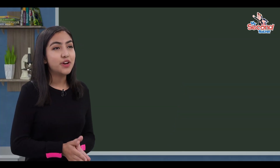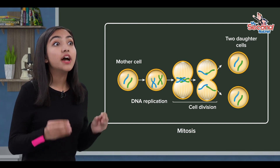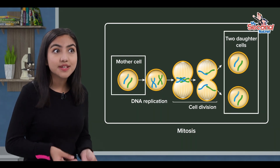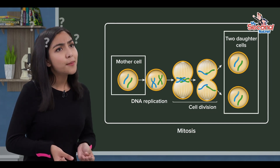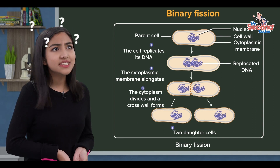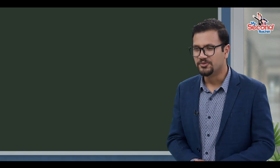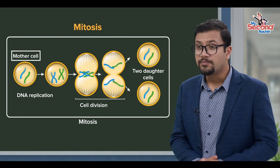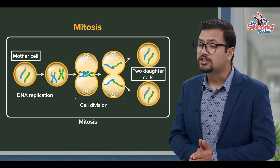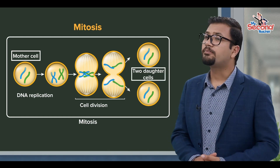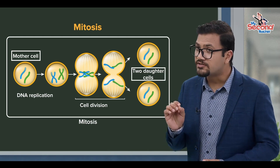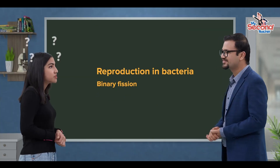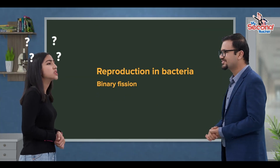In the previous session, we discussed mitosis cell division, where a cell divides into two other cells. In binary fission, similarly, a mother cell divides into two daughter cells. So, what do you have in binary fission, teacher?